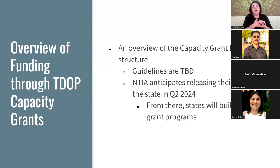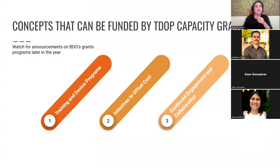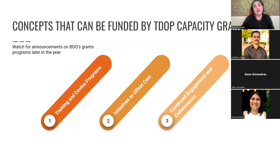The capacity grant funding structure is still being formed. The guidelines are still being determined, and the NTIA anticipates releasing the NOFO to the states in Q2 2024, from which states will build their grant programs. Concepts that can be funded by the Texas Digital Opportunity program plans include capacity grants, training and device programs, initiatives to offset costs, and continued engagement and collaboration. Watch for announcements on video grants and programs later this year.